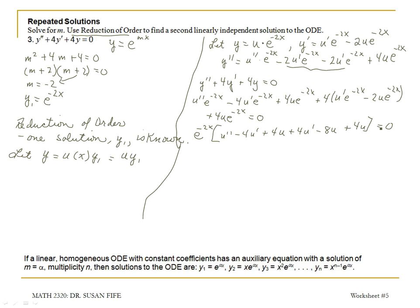When you make this substitution using reduction of order, all of your non-derivative terms should cancel out, and notice that they do. The 4u and 4u give 8u, which cancels with the negative 8u. I can also divide by e to the negative 2x, and that exponential drops out. The u prime terms also cancel in this case — they don't always drop out, but they happen to here. So I end up with u double prime equals 0.